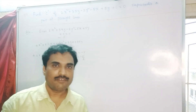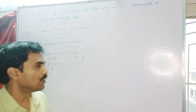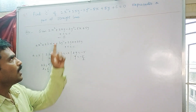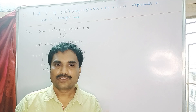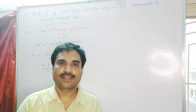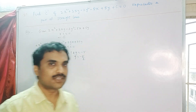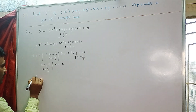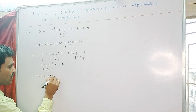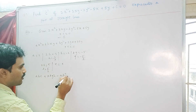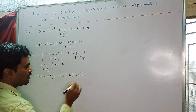We now have the values of a, h, b, g, f, and c. Since the given equation represents a pair of straight lines, the condition must be satisfied. That condition is: abc + 2fgh - af² - bg² - ch² = 0.